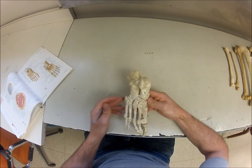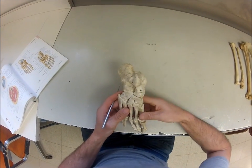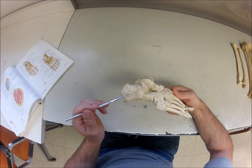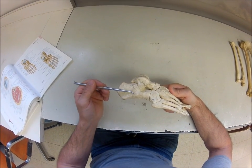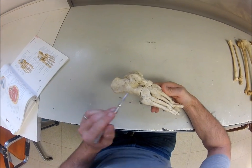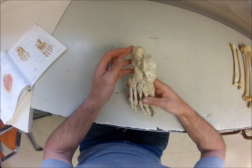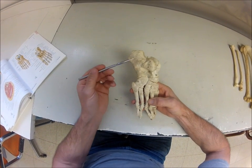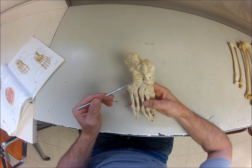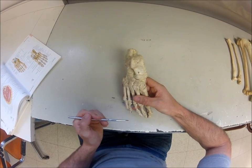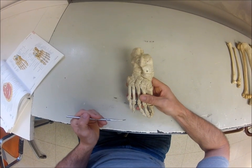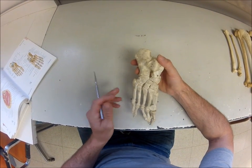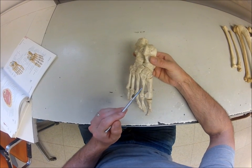Looking at the foot, first we identify the tarsal bones. There are two relatively large ones: the more superior is the talus and the more inferior is the calcaneus — your heel bone. Coming out anterior to those, off the talus is the navicular bone, and off the calcaneus is the cuboid bone. Off the navicular are the first, second, and third cuneiform bones. Attached to those and the cuboid are the metatarsals.